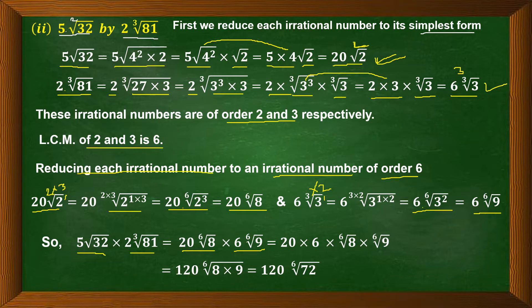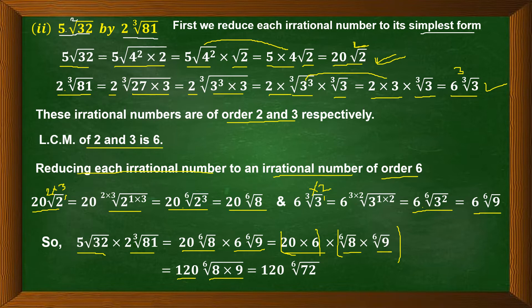We shall apply the first law. Taking 20 and 6 together and applying the law for the 6th roots: 20 into 6 is 120 and 6th root of 8 into 9. We applied the first law which says nth root of a into nth root of b equals nth root of a into b. Here the order is 6, so 8 into 9 is 72. The answer is 120 into 6th root of 72.